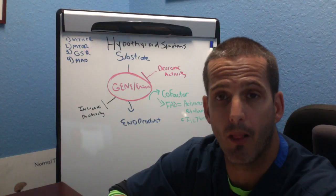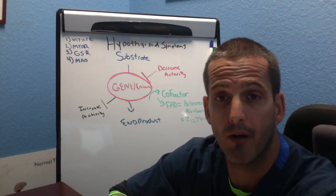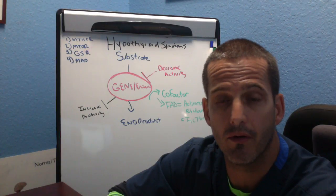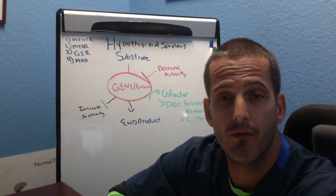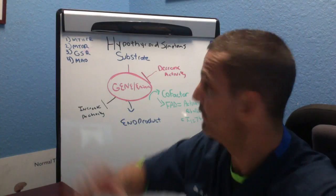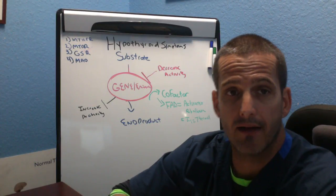But where FAD or activated riboflavin comes into play is if you have a hypothyroid problem, you have low T4, you're not going to be able to make the cofactor that's necessary for energy production. And there's four major enzymes that require FAD as a cofactor.